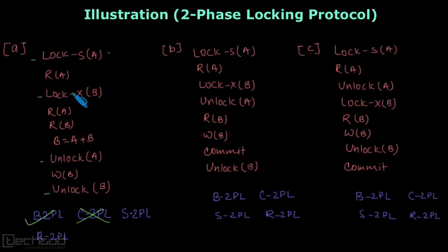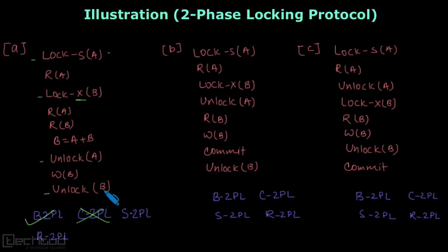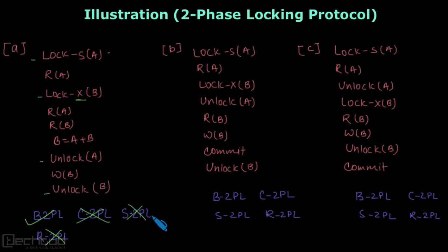Now let's check for strict 2PL. Strict 2PL says that exclusive locks are only released after commit. Here we have one exclusive lock, and it is being released at the end, but there is no commit shown. If we assume commit is after it, then this unlock was before commit, which is not valid according to the rule. So it's not strict 2PL, and if it is not strict, it is not rigorous either, because rigorous has an additional rule that all locks must be released after commit.